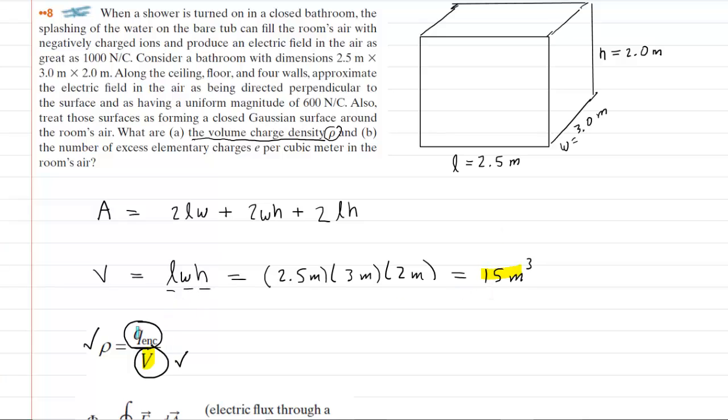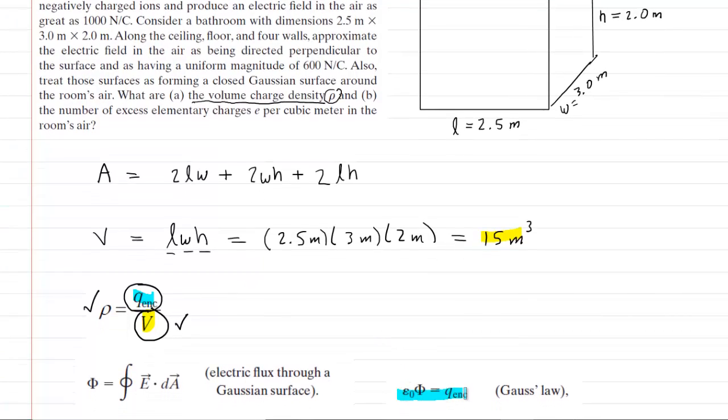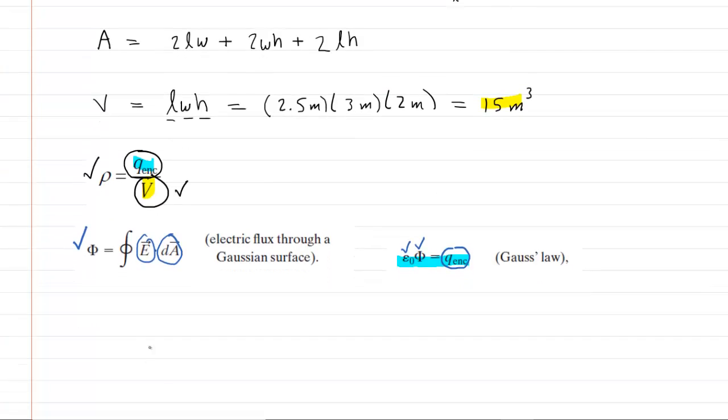The more challenging aspect is for us to figure out the total amount of charge enclosed by this bathroom. So let's scroll down a bit here and take a look at Gauss's law. Gauss's law tells us that we can determine the enclosed charge by simply multiplying a constant by the so-called electrical flux. So in order to get the enclosed charge, we're actually going to need to get the total electric flux through the surface of this bathroom.